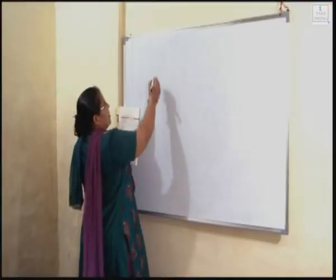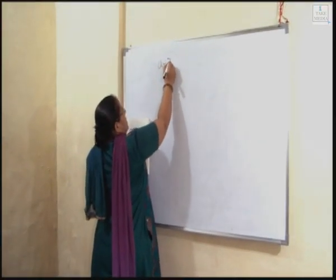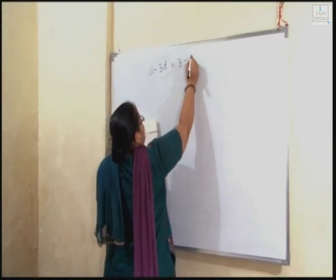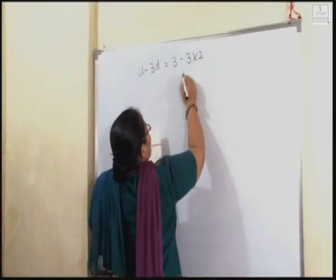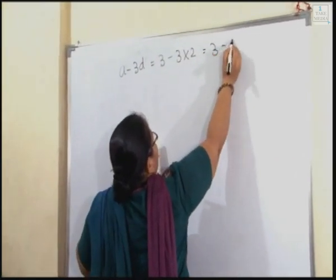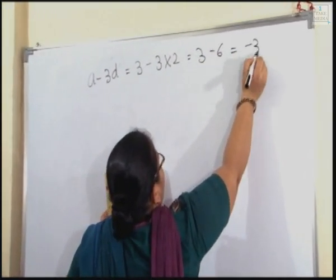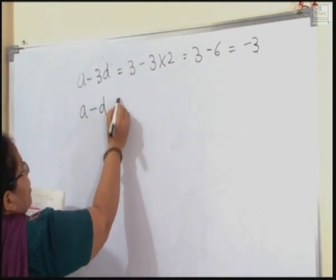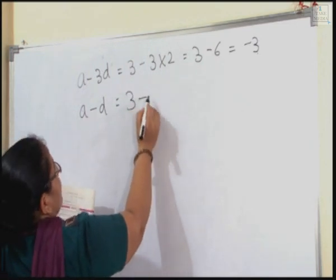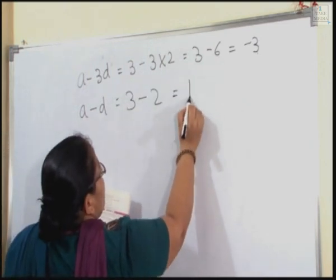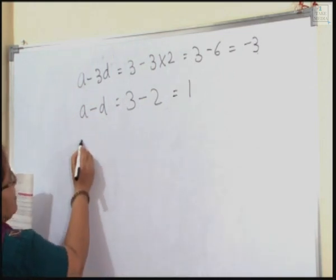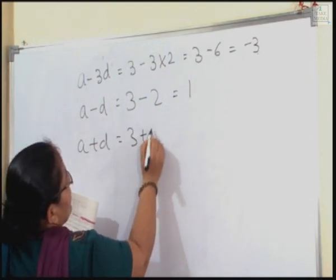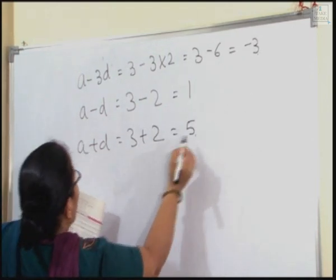So D value equals 2. The first term is A minus 3D, that means 3 minus 3 times 2. This comes to 3 minus 6, so first term is minus 3. The second term is A minus D, so A value is 3 and D value is 2, answer comes 1. The third term is A plus D, A value is 3 and D value is 2, so answer comes 5.